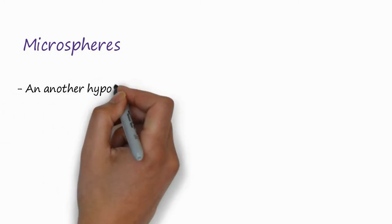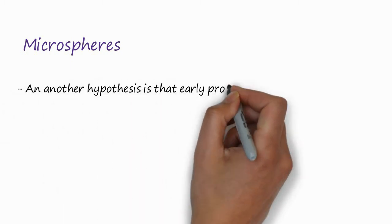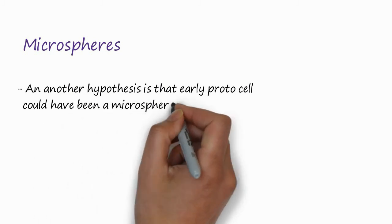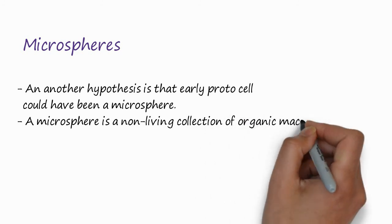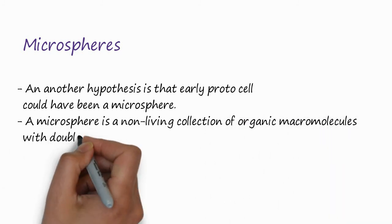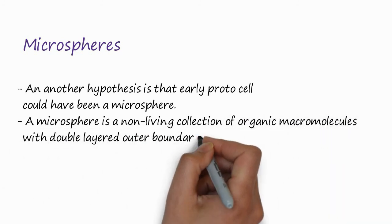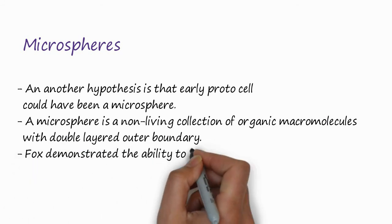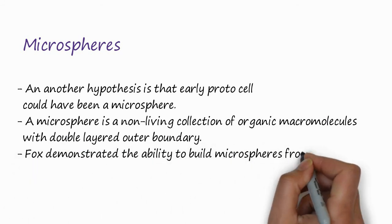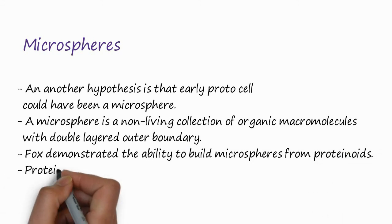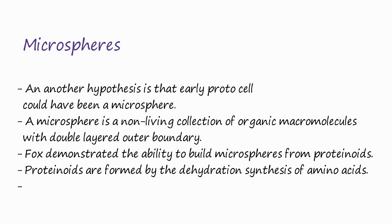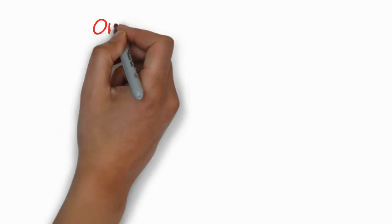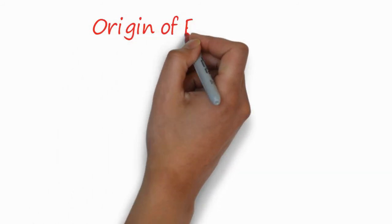The second type of early cell was the microsphere. The second hypothesis was that the early protocell could have been a microsphere — a non-living collection of organic molecules with a double-layered outer boundary. Fox demonstrated the ability to build microspheres from proteinoids. Proteinoids are formed by the dehydration synthesis of amino acids. You can see here the beads and the proteinoids.